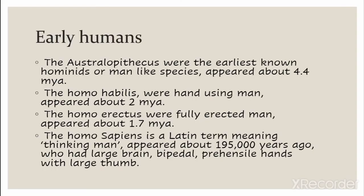Early humans: Australopithecus was the earliest hominid — a man-like species — who appeared about 4.4 million years ago. Then we have Homo habilis, the hand-using man, who appeared about 2 million years ago. Then we have Homo erectus, known for their fully erect posture, who appeared about 1.7 million years ago. Then we have Homo sapiens, a Latin term meaning 'thinking man,' who appeared about 195,000 years ago and had a large brain, bipedal locomotion, and prehensile hands with a large thumb.